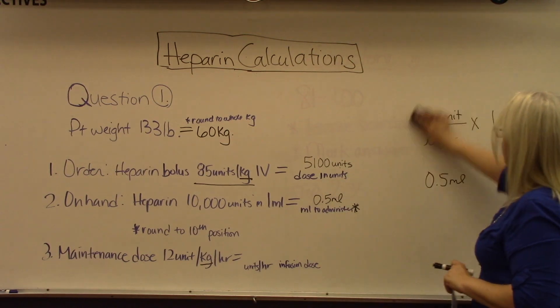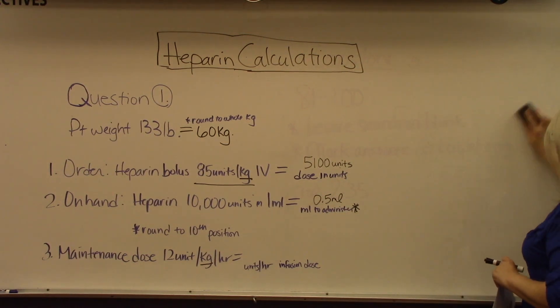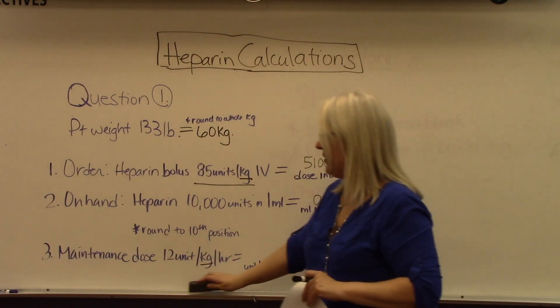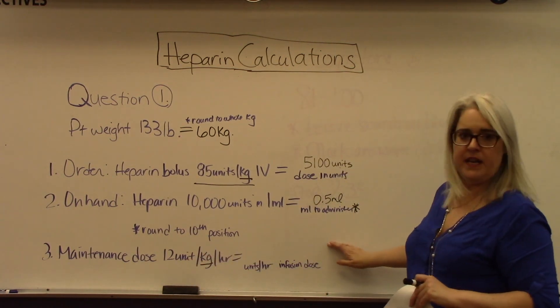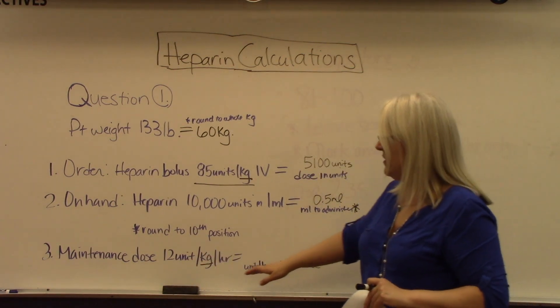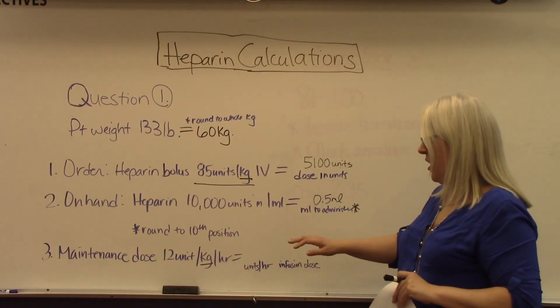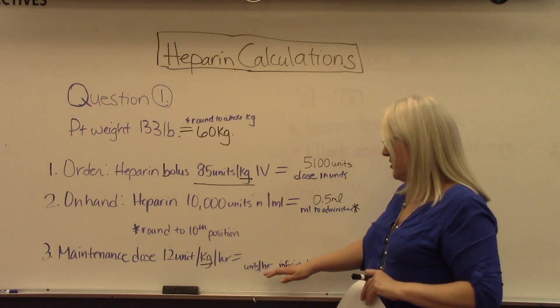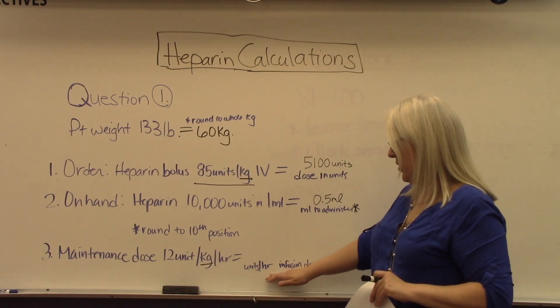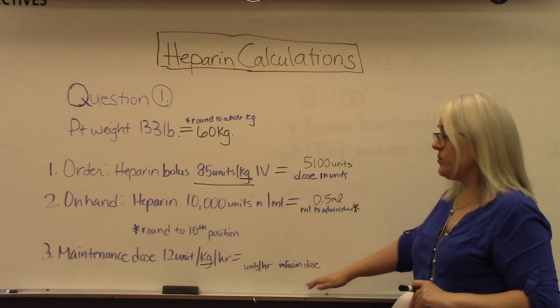That's step two. We've got one more part to do, and that is calculating our maintenance dose. The maintenance dose is 12 units per kilogram per hour.